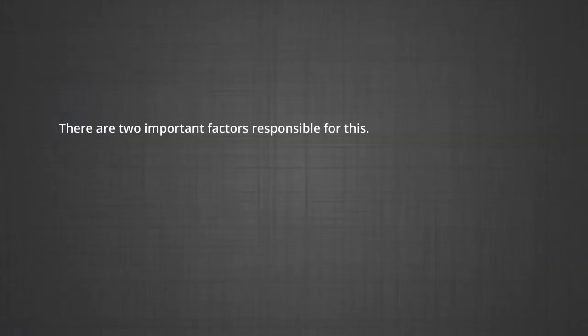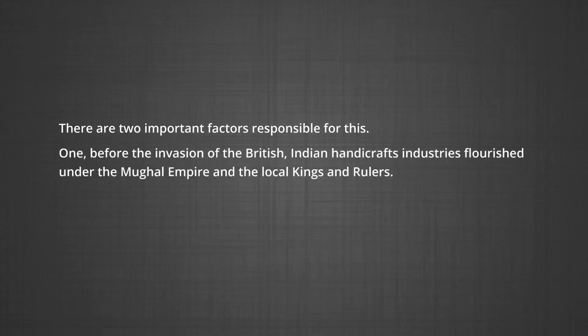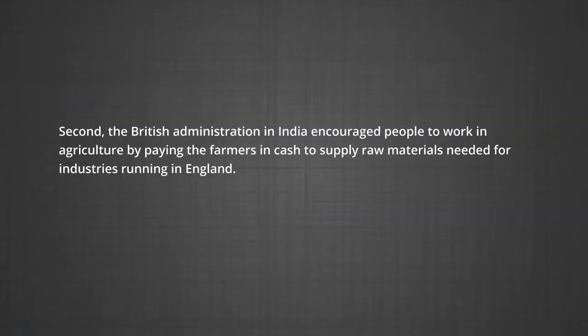There are two important factors responsible for this. First, before the invasion of the British, Indian handicraft industries flourished under the Mughal Empire and the local kings and rulers. When the British invaded the country, they overpowered the Mughal Empire and defeated local rulers, thus destroying the handicraft industries. As a result, workers in these industries were forced to move towards rural areas and adopt agriculture as their main livelihood. Second, the British administration encouraged people to work in agriculture by paying the farmers in cash to supply raw materials needed for industries running in England.